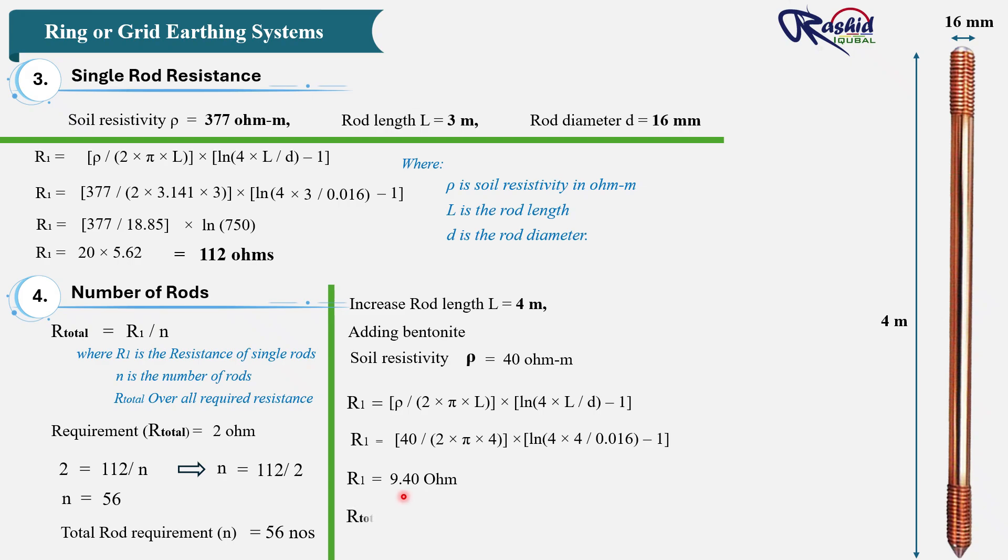So we need to calculate how many rods are required to achieve 2 ohms. So we know the formula: R_total = R₁ / N. R₁ we have here is 9.40 ohm divided by N, we don't know how many rods required. So after solving this equation, we get N = 4.7. So let's take a round figure, 5. We require 5 number of rods. So this is practical and economical compared to the 56 rods. By using longer rods, improving the soil, and adding a buried copper ring, we can achieve a reliable earthing system with fewer rods and lower cost.